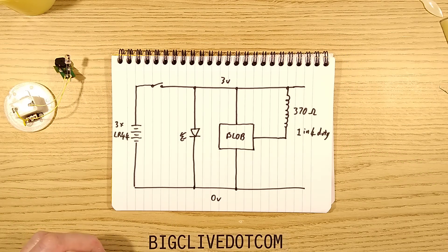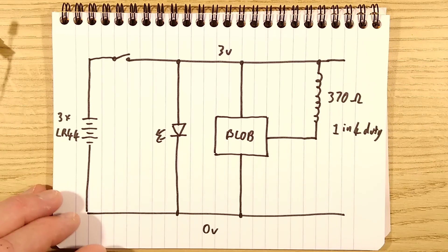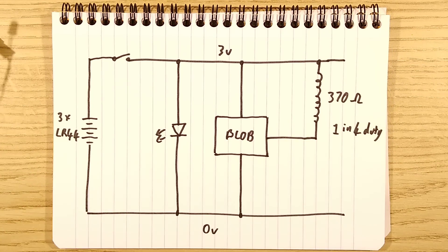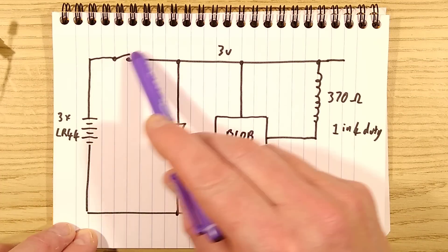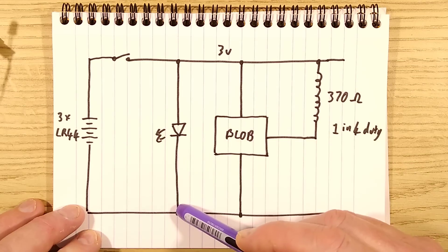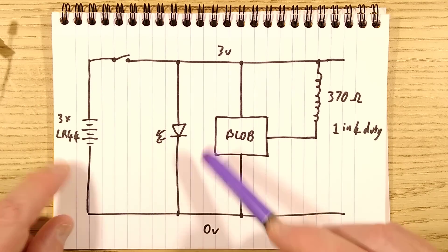This is take two. I really messed up take one but by the time I'd opened it I thought we might as well just continue on from where I left off. So here are the button cells, there's the switch and then the LED is clamped right across the button cells so it's relying on their internal impedance to limit the current.